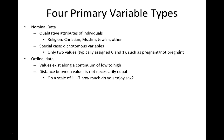Ordinal data is sometimes considered categorical data. These values exist along a continuum of low to high in terms of the numbers assigned, but the distance between those values is not necessarily equal. For example, on a scale of one to seven — how much do you enjoy sex, where one means 'I don't enjoy sex at all' and seven means 'I love sex more than life itself' — the distance between 1 and 2 may not be the same as between 6 and 7, so they don't represent exact equal intervals but give a sense of a low-to-high continuum.